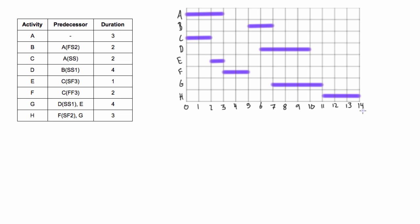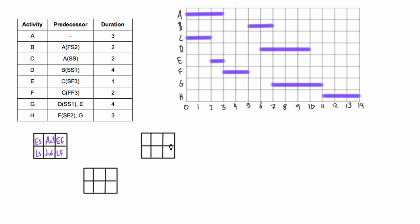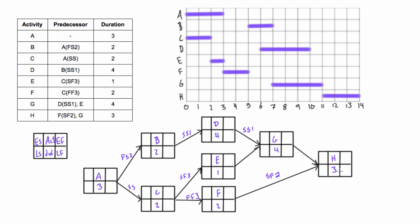Now let's draw the PDM network diagram. I fast-forwarded through that part because it's a long, boring process. I encourage you to check for yourself to make sure it's all correct. We'll do our forward pass and then our backward pass, and we'll also compare it to our Gantt chart to make sure everything matches up.